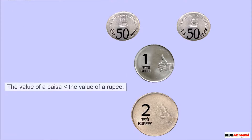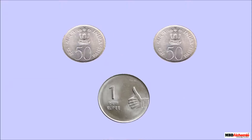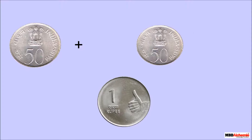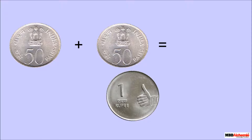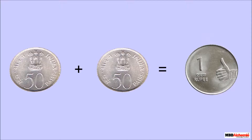The value of a paisa is lesser than the value of a rupee. 2 fifty-paise coins make 1 rupee, or 2 fifty-paise coins is equal to 1 rupee.